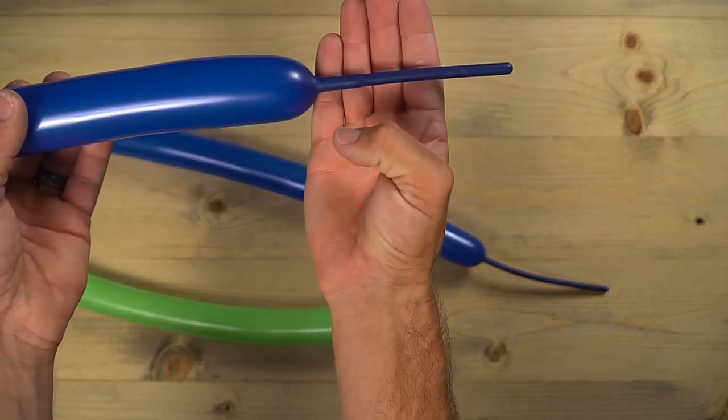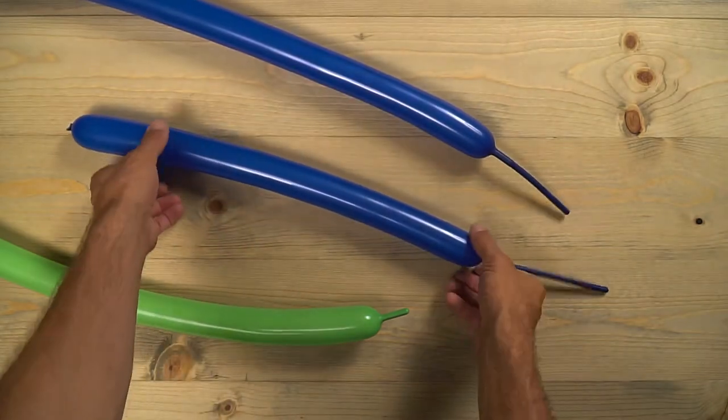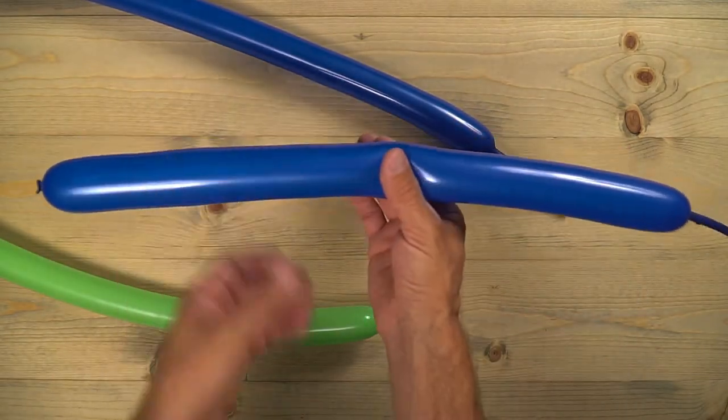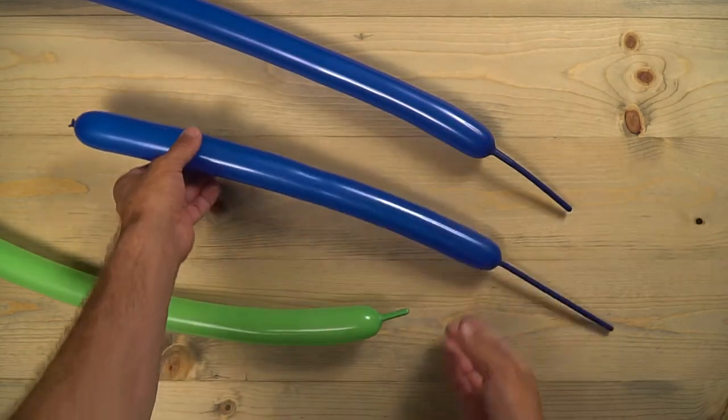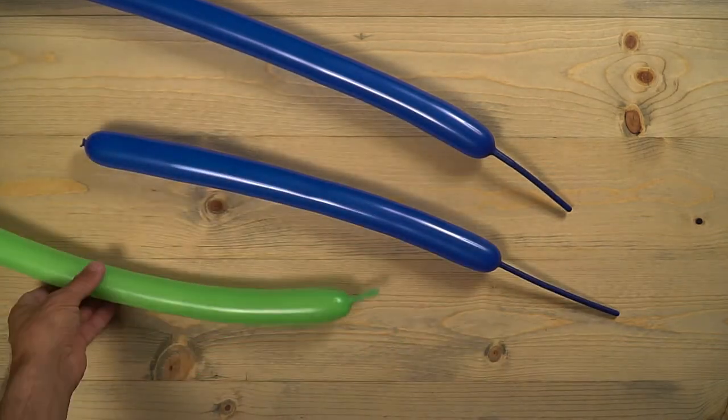So that first dark blue, you're going to blow it up about this much left over. And that second one, you're going to be using about this much here. And for that lime green, I'll have about one to two fingers left over at the end.